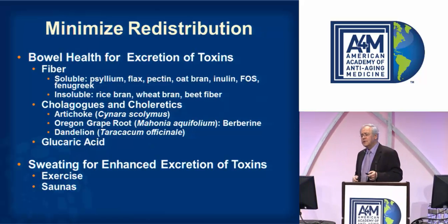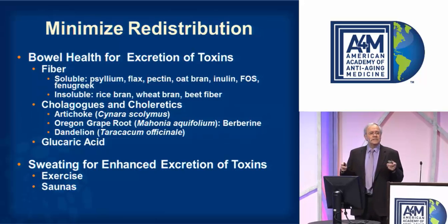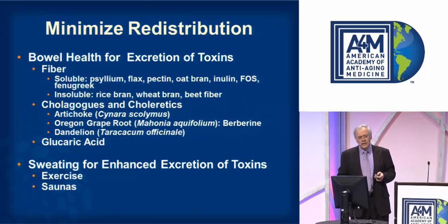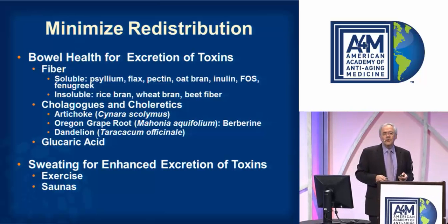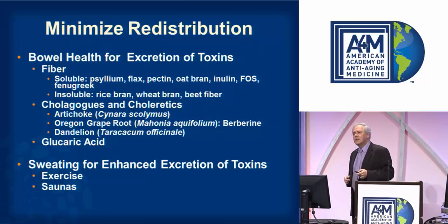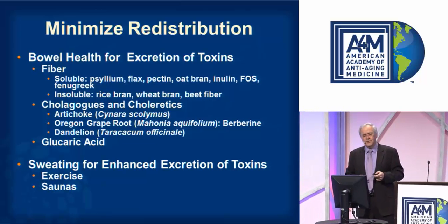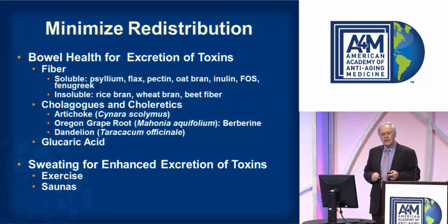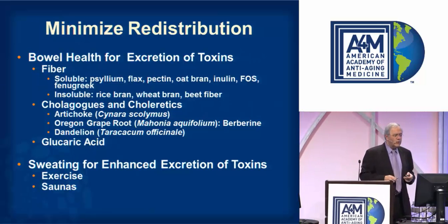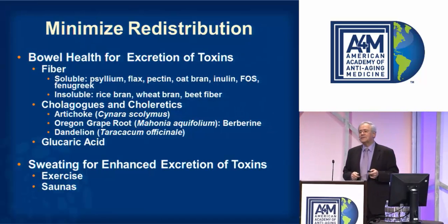To minimize redistribution, one simple strategy is to increase the various types of fiber in the diet. We can also use cholagogues or choleretics that increase the production and flow of bile through the liver. Foods for this include artichoke, Oregon grape root, dandelion, and glucaric acid.